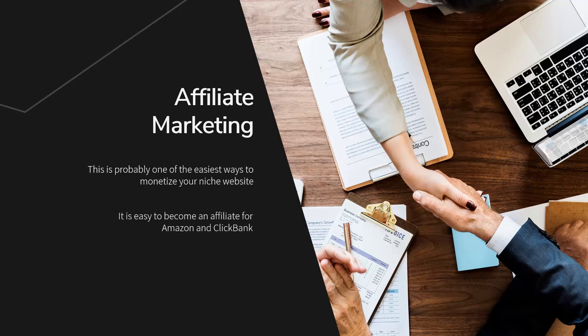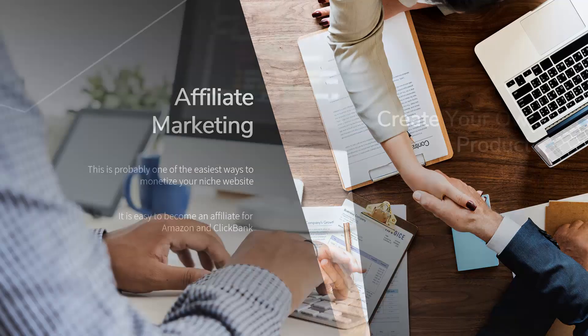It is easy to become an affiliate for Amazon and ClickBank. All you need to do is complete an easy application process and you will be given instructions on how to obtain your affiliate links. Getting accepted by affiliate networks like Commission Junction and ShareASale is not as easy, so look at this a bit later on.